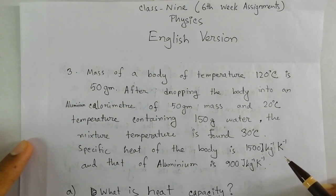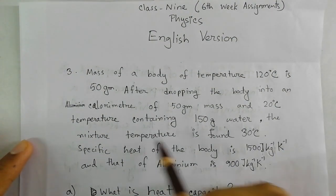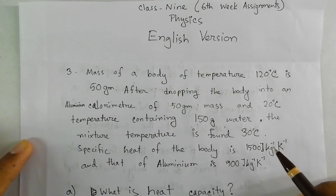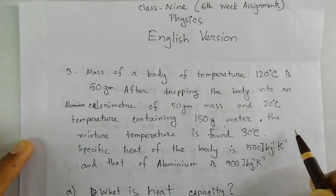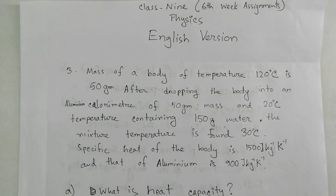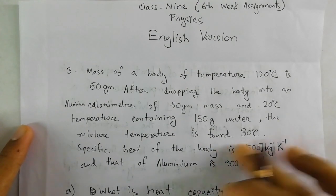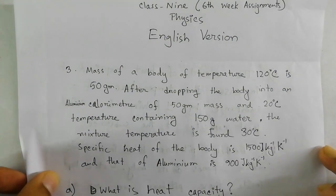Here we have the question of the sixth week physics assignment, English version. The question says there is a body which has a temperature of 120 degrees Celsius and a certain mass, and it was dropped into an aluminium calorimeter of 50 gram mass. The calorimeter contains 150 grams of water, and the mixture of the calorimeter, aluminium, and water has a temperature of 30 degrees Celsius. The specific heat of the body and of aluminium are both given.